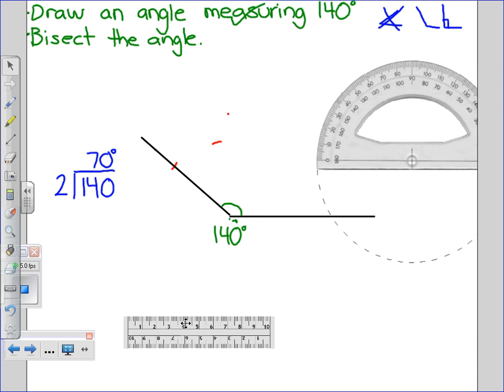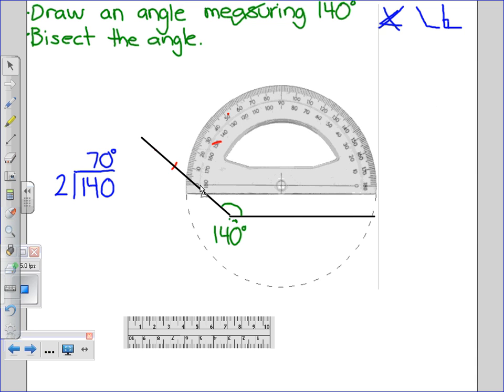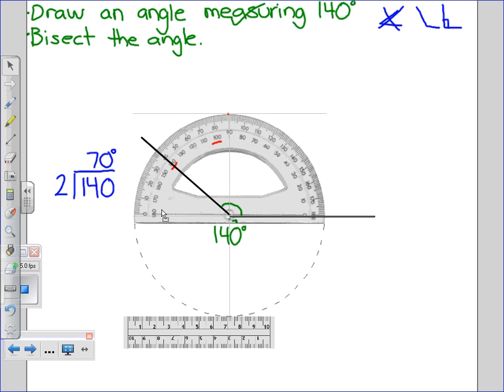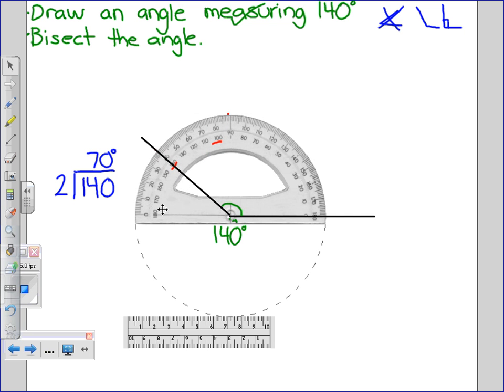So, you bring your protractor back, put the crosshairs of your protractor onto the vertex of your angle, making sure that your lower arm is lined up along the 0 degree line of the protractor. Taking your marker again, or pencil, putting a dot above 70 degrees.